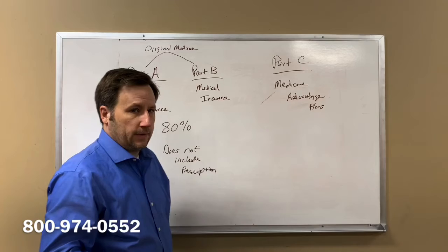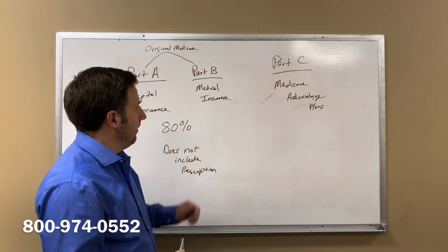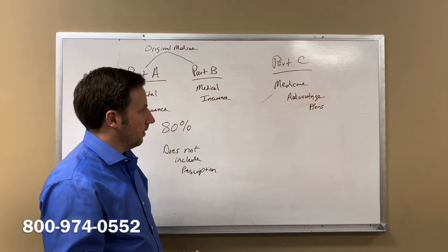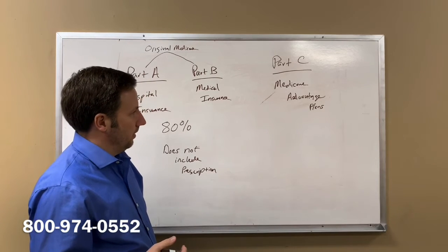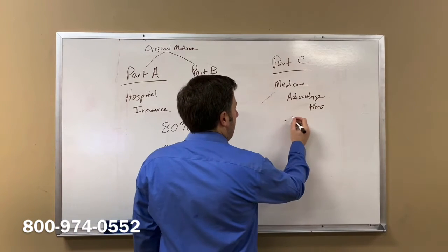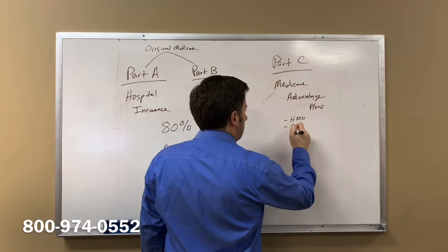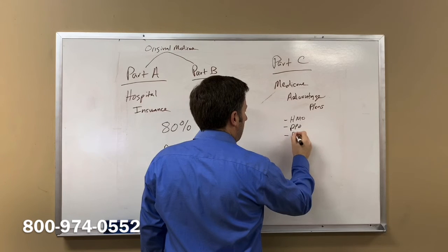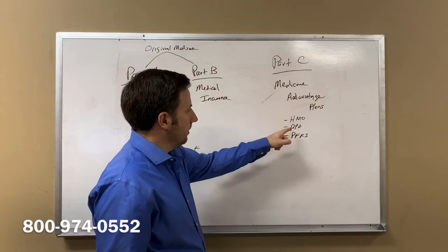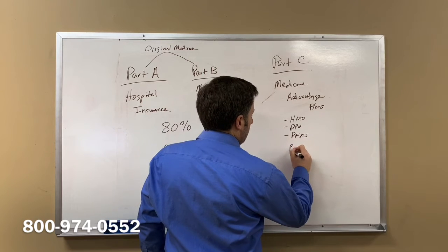Medicare Advantage plans are also known as replacement plans. When you enroll in Original Medicare Part A and B and become eligible for Medicare and get your Medicare card, you have the option of enrolling in a Medicare Advantage plan. Typically, these are HMO or PPO plans. There's also private fee-for-service and a couple other options, but typically HMO and PPO are the most popular.